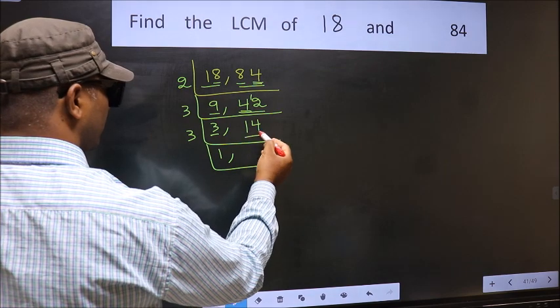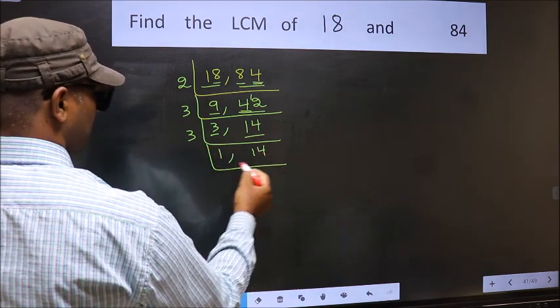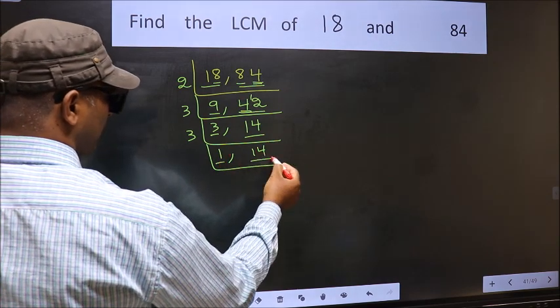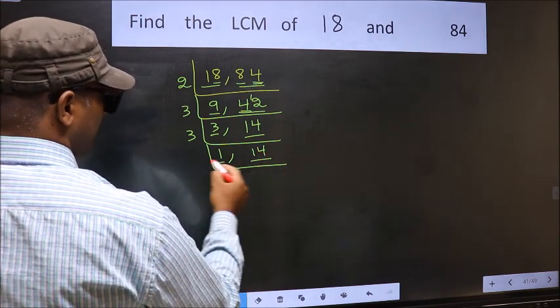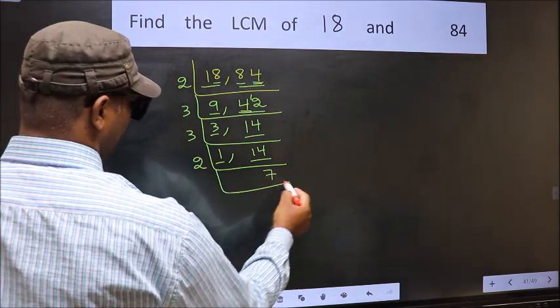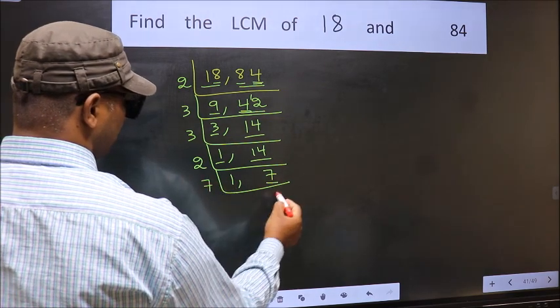The other number 14 is not divisible by 3. 14 is 2 sevens 14. Now we have 7. 7 is a prime number. So 7 ones 7.